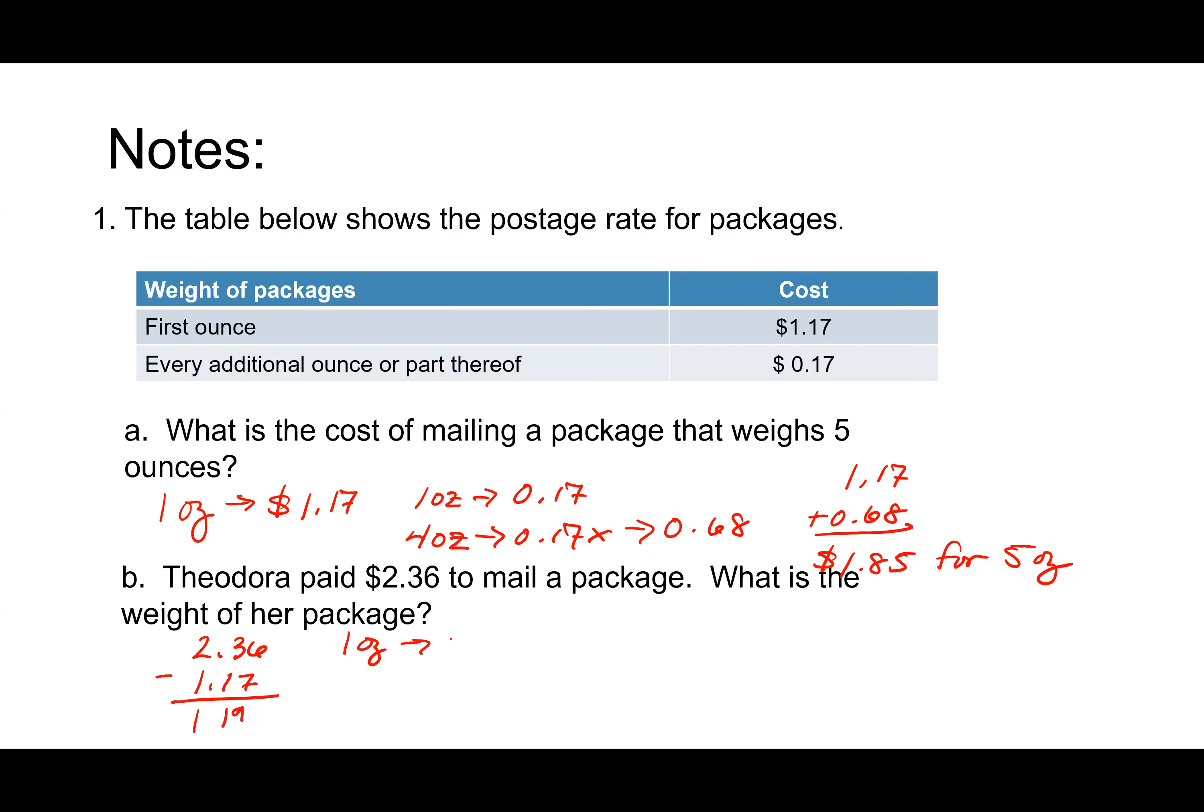So one ounce at a dollar 17. And then you divided $1.19 by 17 cents. You shifted the decimal place. Nice job. And what did you get for that? So we are starting with dollars on the left and then weight on the right. And you went to $1.19 and that was seven ounces. You added them together and you got eight ounces. Great job.